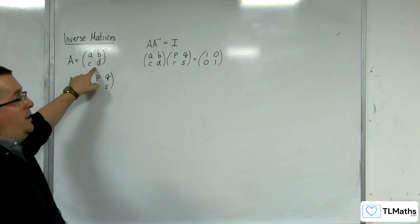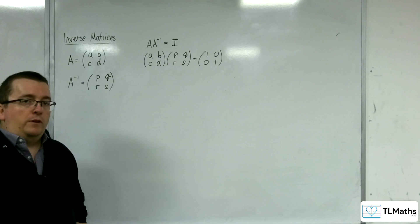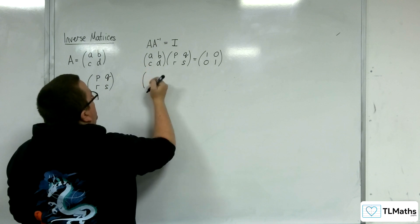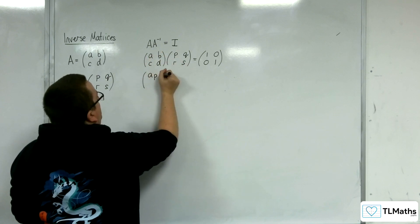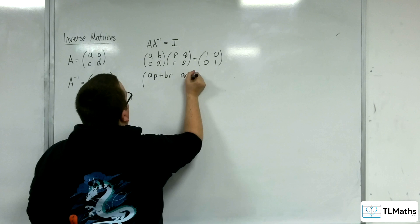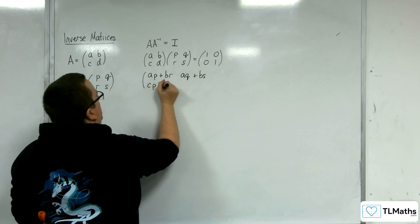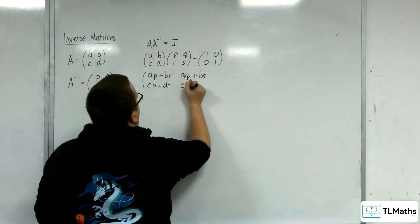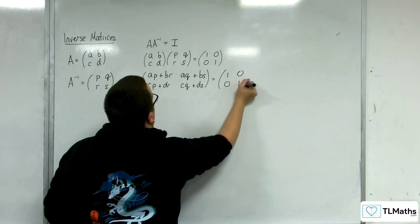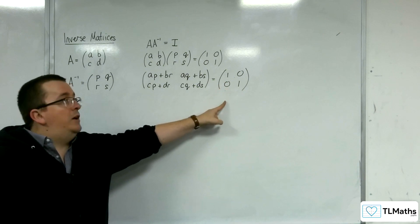So we're going to multiply these two matrices together. A, B multiplied with P, R gives AP + BR; and A, B multiplied with Q, S gives AQ + BS. C, D multiplied with P, R gives CP + DR; and C, D multiplied with Q, S gives CQ + DS. This has got to equal the identity matrix 1, 0, 0, 1. These entries here correspond to the 1, 0, 0, 1 in the identity matrix.